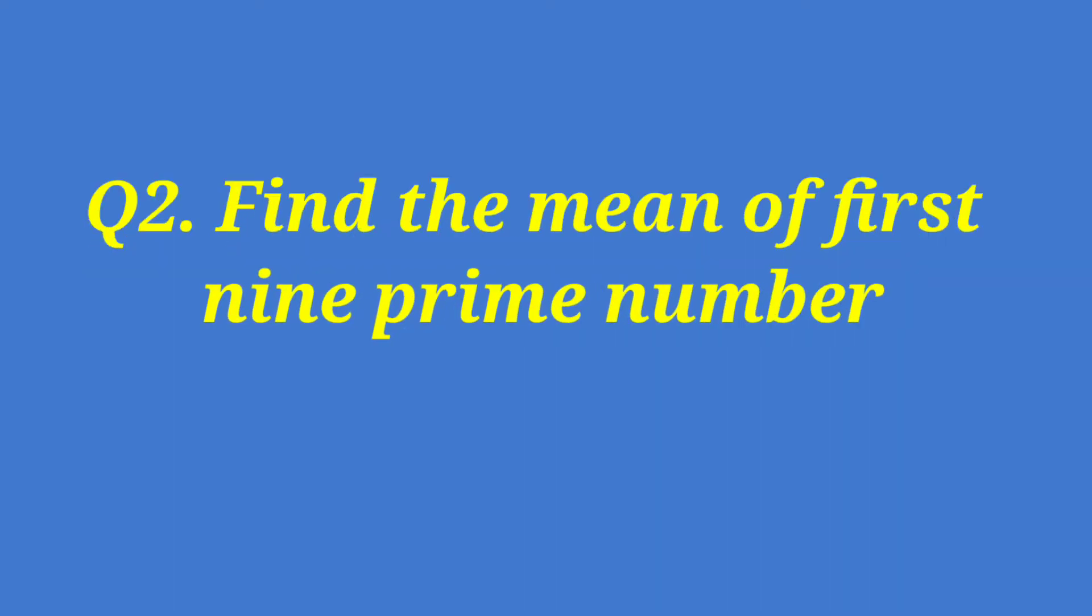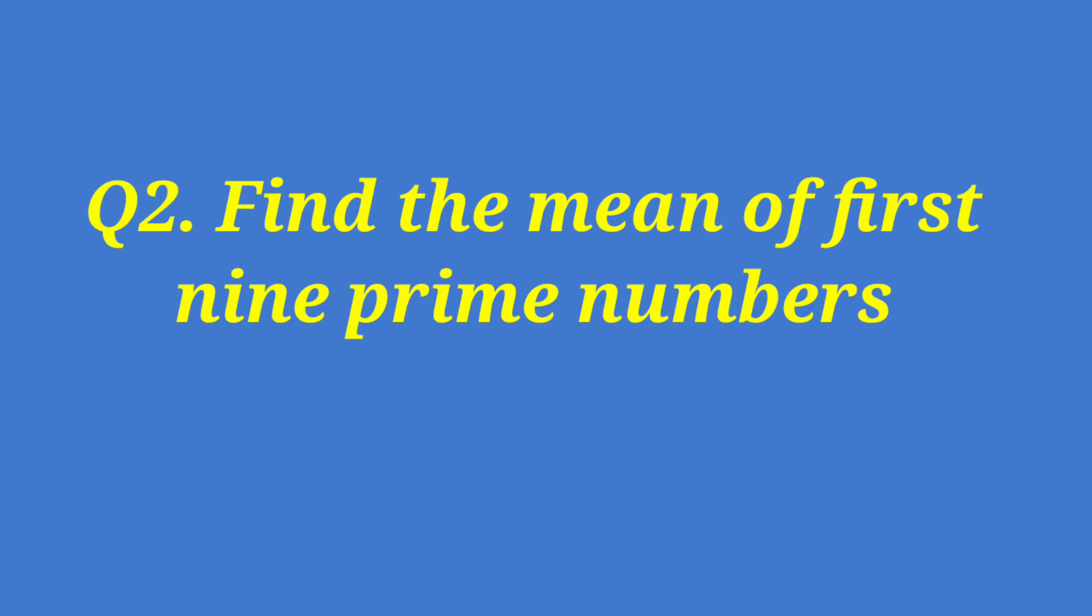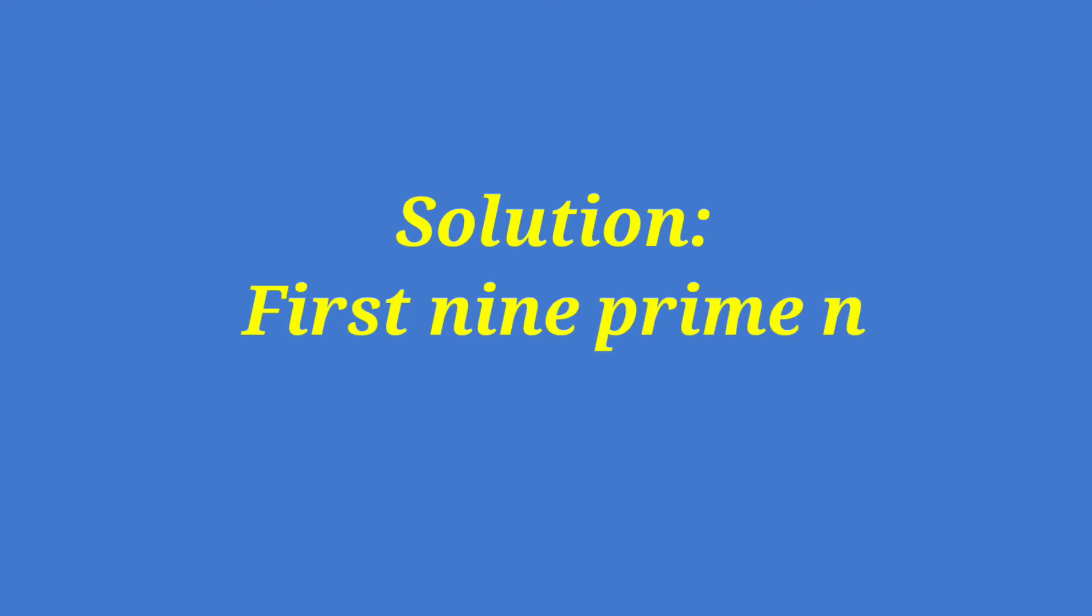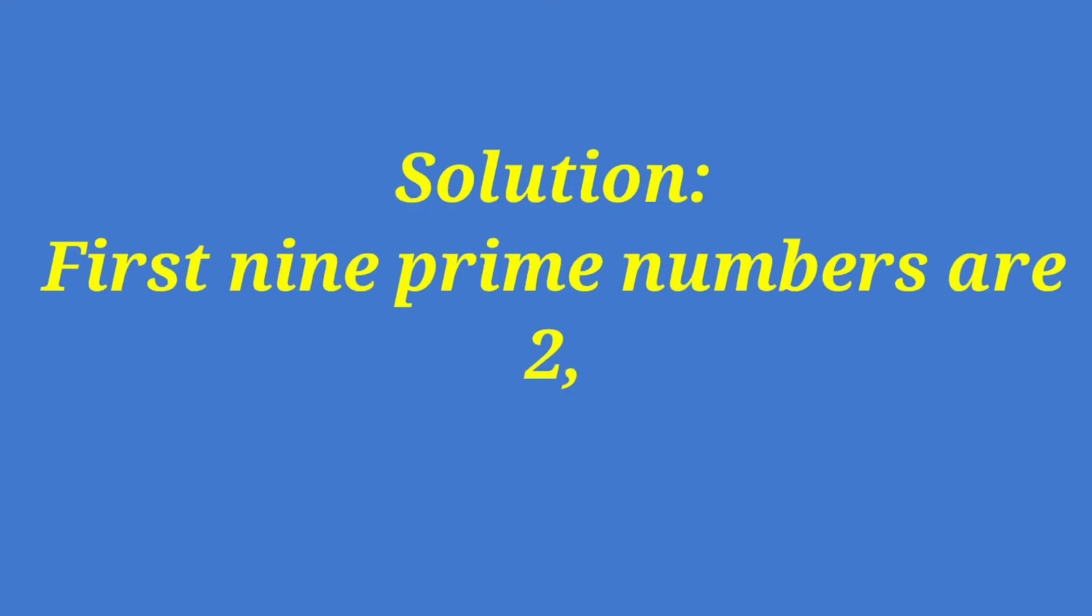Question number two: Find the mean of the first nine prime numbers. Many students do not know odd numbers, even numbers, and prime numbers, so you must know them. Here is the solution: The first nine prime numbers are 2, 3, 5, 7, 11, 13, 17, 19, 23.